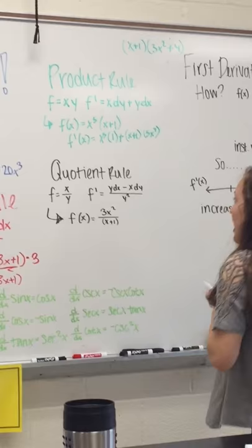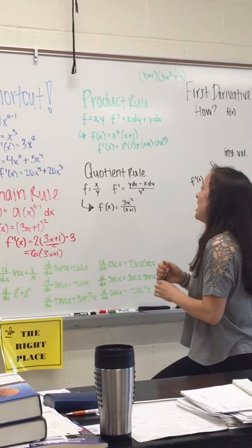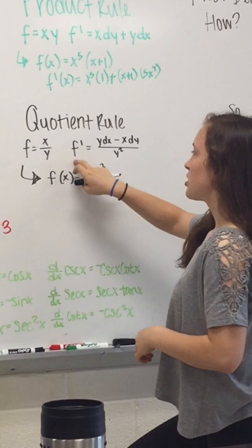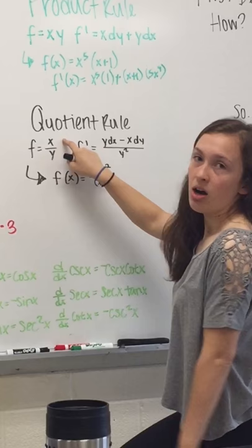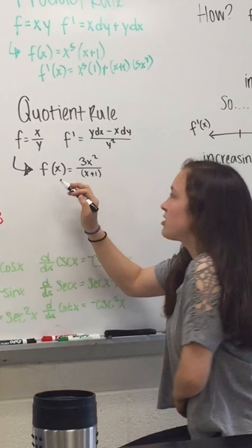And now, similarly to the product rule, the quotient rule would apply when you were dividing two groups of terms by each other. So, this would be the bottom times the derivative of the top, minus the top times the derivative of the bottom, over the bottom squared.